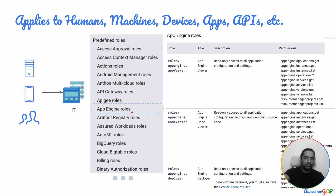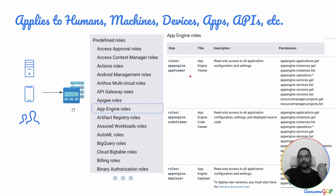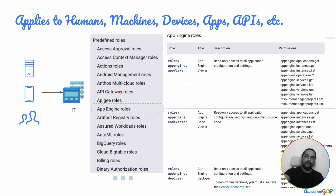This applies not only to human users, but also when applications talk to other systems. You can apply these rules to automated processes as well. For example, if there's an automated process listing what instances or applications are running at the end of the day for a report, it won't be a human user — it might be a system. Those permissions can be applied to those systems also. You should not be giving code viewer or deployer permissions to an application or user who only needs to view the application.